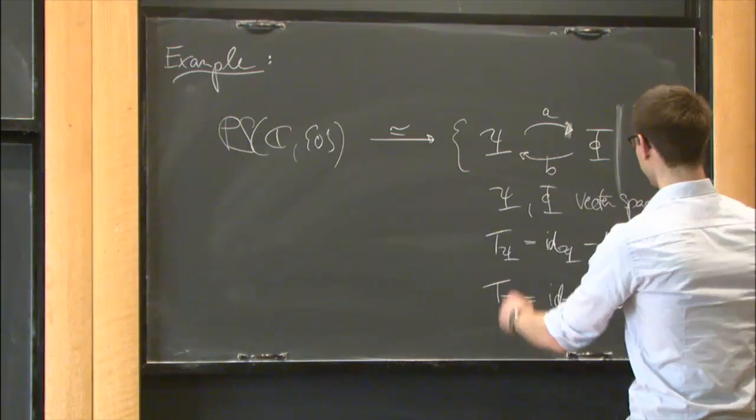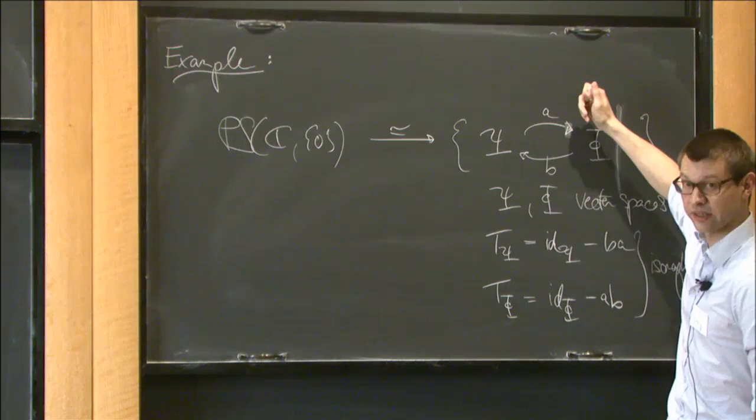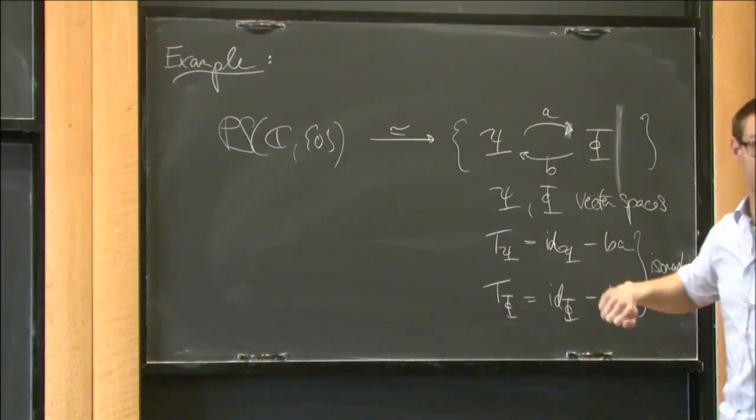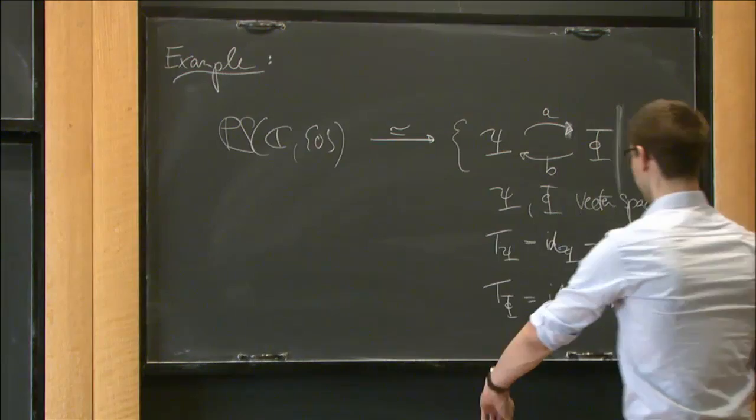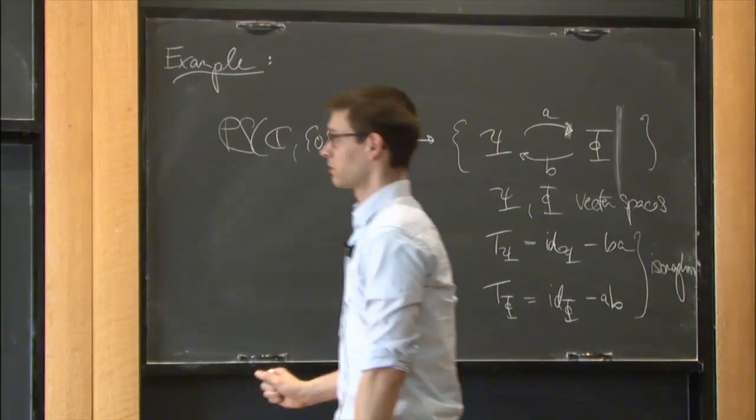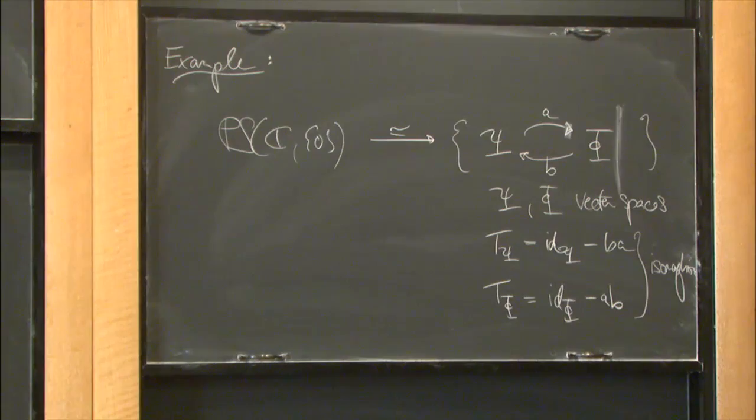These are what are called vanishing cycles and nearby cycles, connected by certain canonical maps called the canonical map and the variation map. These transformations are the monodromy transformations on both of these vector spaces. I'll see them appear in a more general context, which is why I don't want to define them precisely right now.